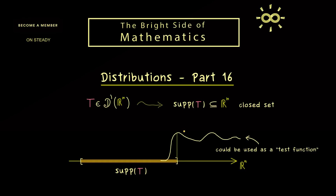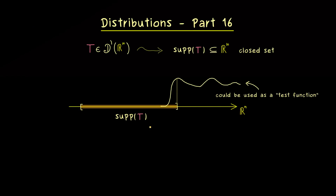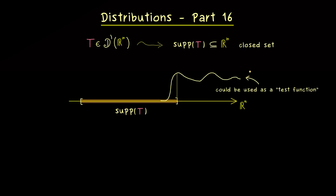Obviously this heavily depends on what the support of T actually is. If the support of T is the whole space Rn, we cannot extend anything, but if it's a compact set in Rn we can do exactly that.